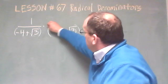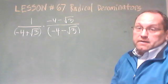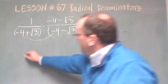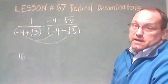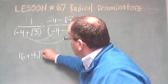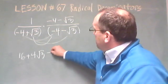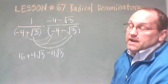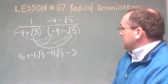We're going to use that conjugate to multiply top and bottom to get rid of the radical. When we multiply this out, we'll get a minus 4 times a minus 4 is a 16. We'll get a minus 4 times a minus square root of 3 is a positive 4 square root of 3. Then we multiply the square root of 3 and the minus 4, getting a minus 4 square root of 3, and the square root of 3 times a minus square root of 3 results in a minus 3.